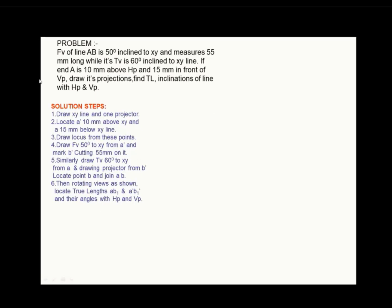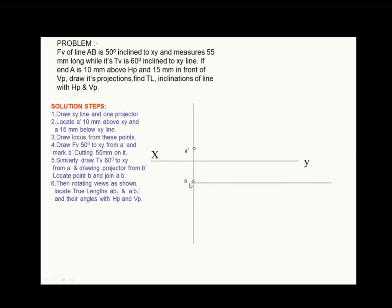These are the steps to be followed for the projection of the line for this question. The very first step is to draw the XY reference line, then draw a vertical line and mark 10 mm and 15 mm above and below the reference line XY. Point A is marked at 10 mm from XY and point A in front of VP is marked at 15 mm from XY. Then draw a horizontal line from point A and from point A dash.